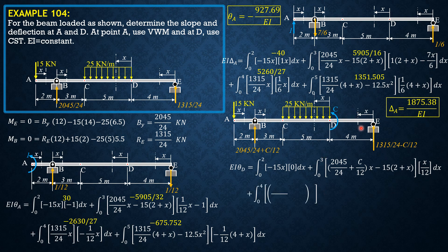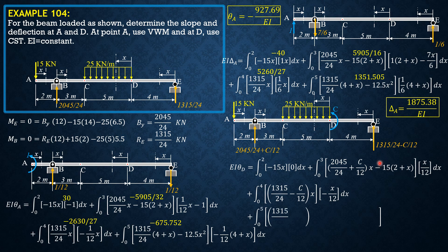In the next section, plus the integral of (1315/24 − C/12)·x, with partial derivative −x/12 dx. And in the last section, plus the integral of (1315/24 − C/12)·(4+x) + C − 12.5x². There is a +C because of the direct couple term.